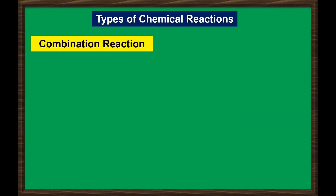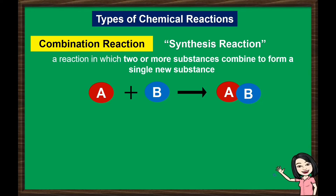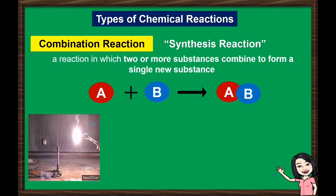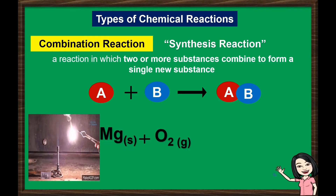Combination reaction, also known as synthesis reaction, is a reaction in which two or more substances combine to form a single new substance. An example of this reaction is when magnesium combines with oxygen gas, with the presence of heat, to produce powdered magnesium oxide.